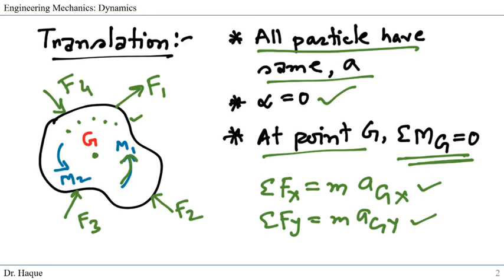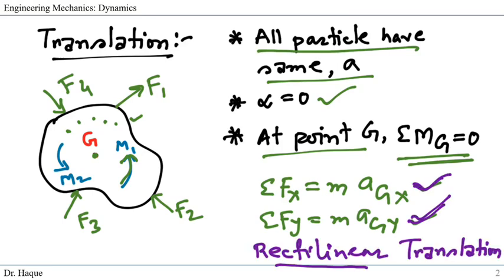One thing to point out: when we're talking about these equations, we're talking about translation at rectilinear condition. We'll also have equations for curvilinear translation because for curvilinear you will have normal and tangential components.